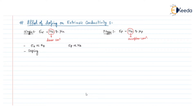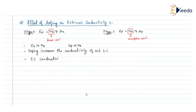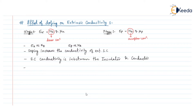Doping increases the conductivity of an extrinsic semiconductor. Semiconductor conductivity is in between that of an insulator and a conductor. A highly doped silicon semiconductor will exhibit metallic properties.